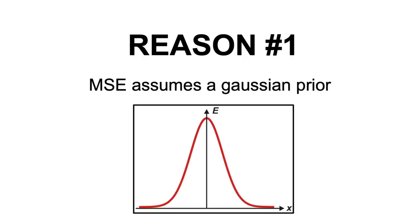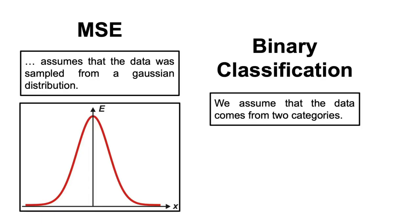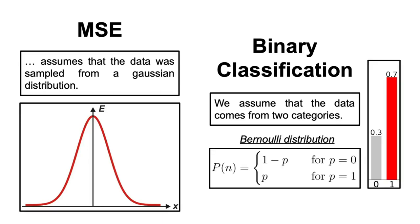Reason number one: the mean squared error assumes a Gaussian prior. By using the MSE loss, we assume that the underlying data has been generated from a normal distribution, while in reality, if our data is classified into two categories, it does not come from a normal distribution, but from a Bernoulli distribution. So we have a mismatch in assumptions here.